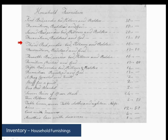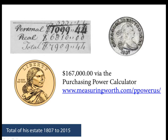A useful tip: determine the present-day value of an estate using the website www.measuringworth.com/ppowerus. In my ancestor's estate, his personal estate was worth $1,099.44, his real estate $6,800, for a total of about $8,000. Using that website, the purchasing power of his 1807 estate is currently worth $167,000 — not a bad chunk of change. You can do this with colonial probates as well, and for early European probates you can use English pound calculators available on the internet.